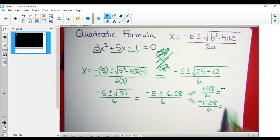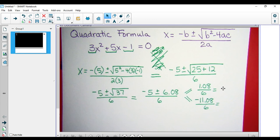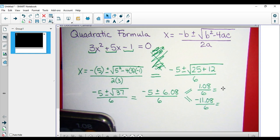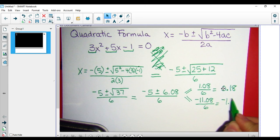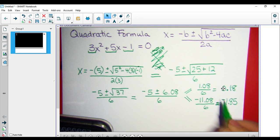And negative 5 minus 6.08 is negative 11.08 divided by 6. And again, punch those in on your calculator, keep your life easy. 1.08 divided by 6 is 0.18, 18 hundredths. And negative 11.08 divided by 6 is negative 1.846 repeating. So I'm going to round it off to negative 1.85.